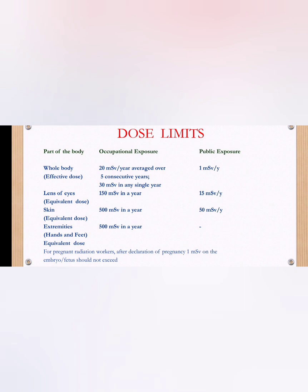For skin dose, the occupational exposure limit is 500 millisieverts per year, and the public exposure limit is 15 millisieverts per year. For extremities, the occupational limit is also 500 millisieverts per year, with no specific public limit mentioned. For pregnant radiation workers, after declaration of pregnancy, the equivalent dose to the embryo or fetus should not exceed 1 millisievert — this is an important point.